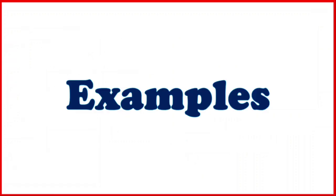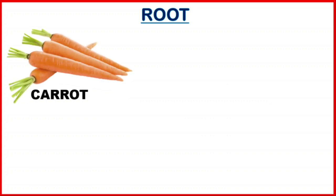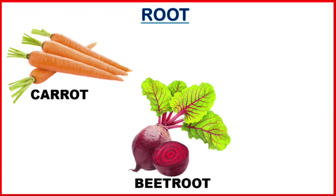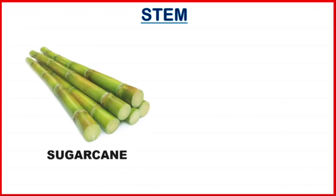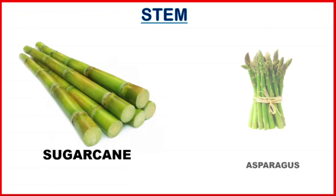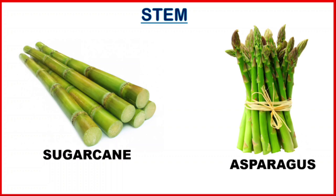Now let us see some examples with the help of pictures. First one is root: carrot, beetroot, radish — these are examples of root. Next is stem: sugarcane, asparagus — these are examples of stem.